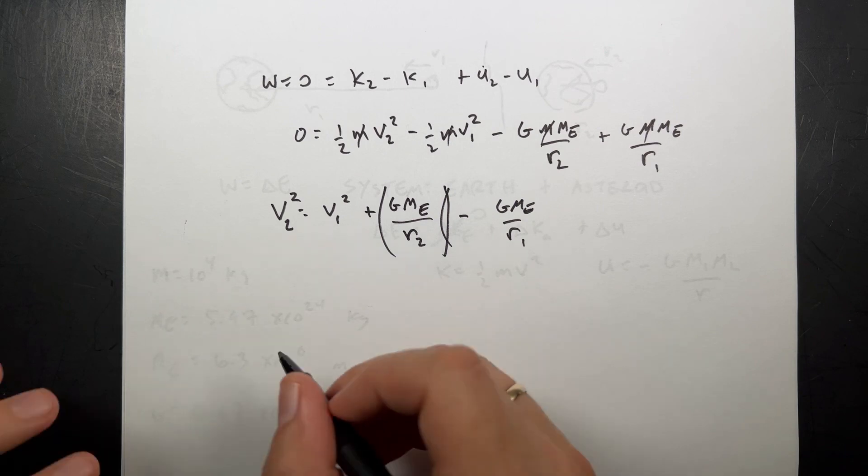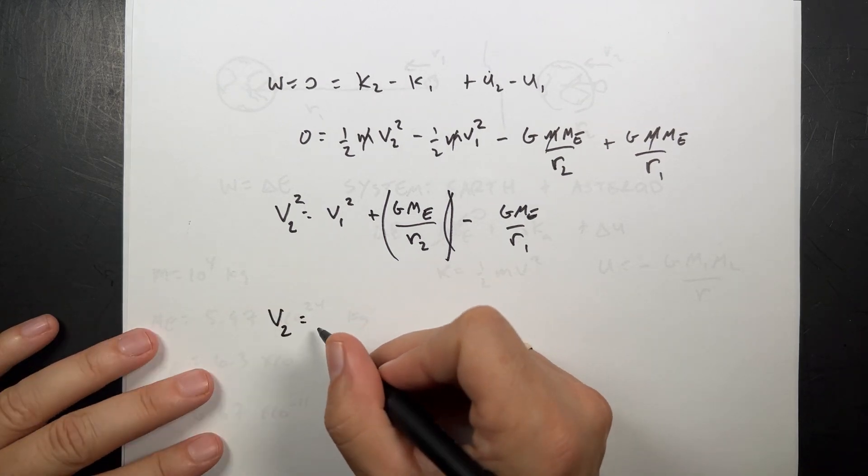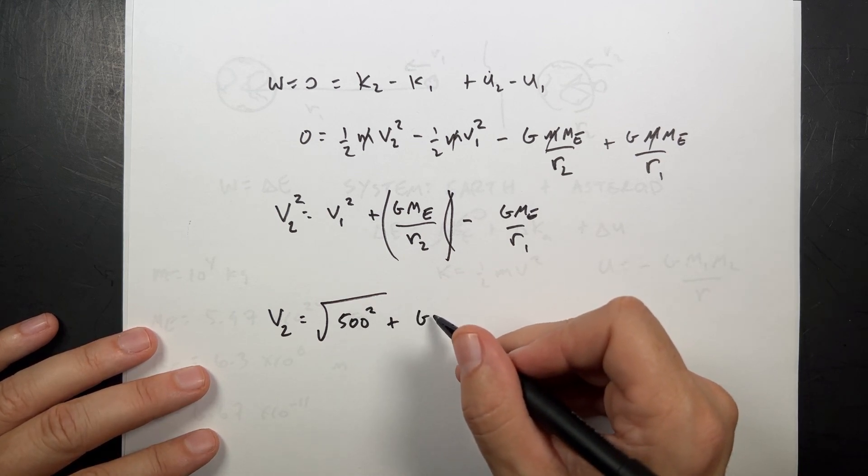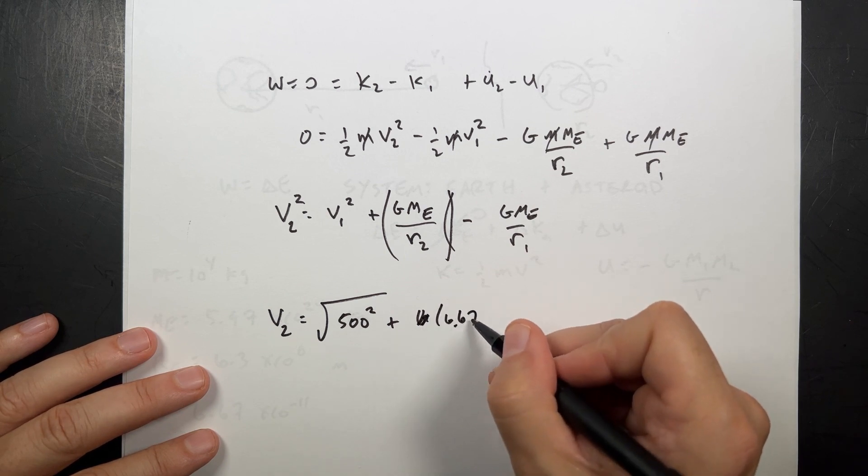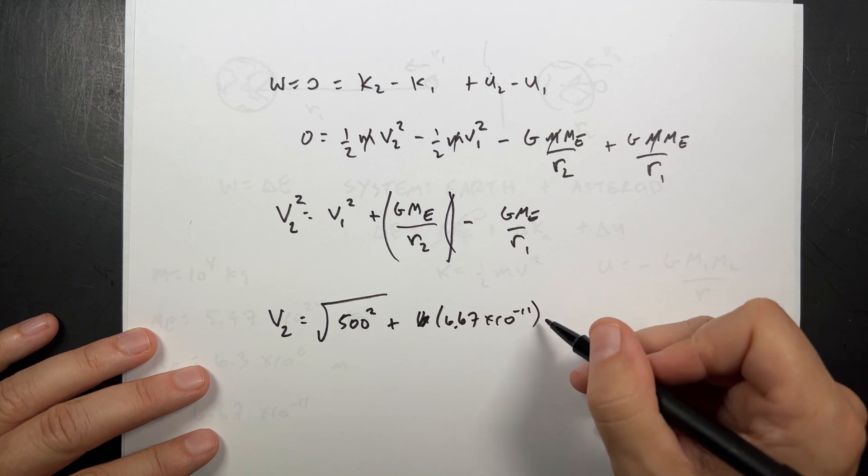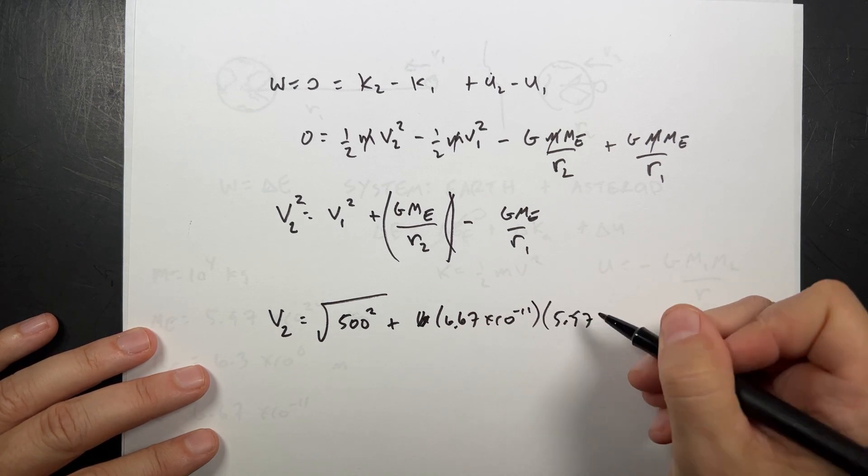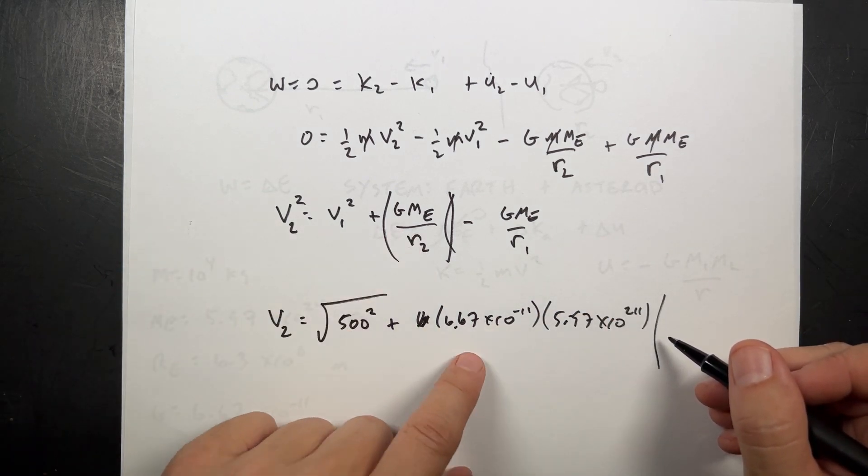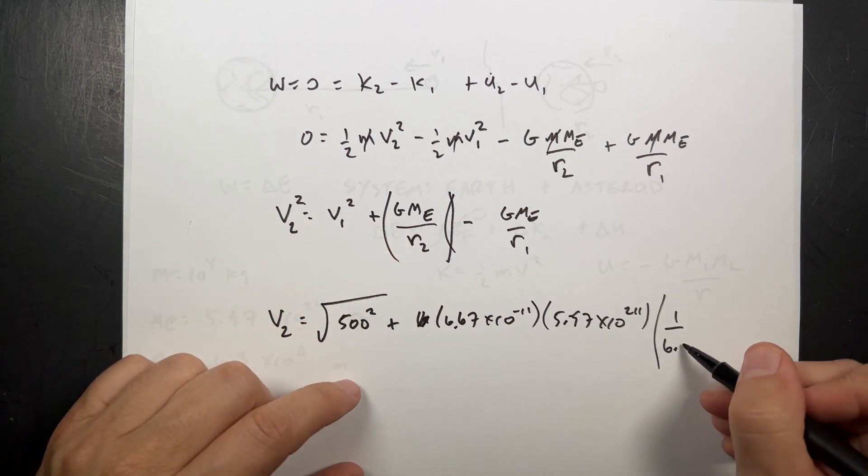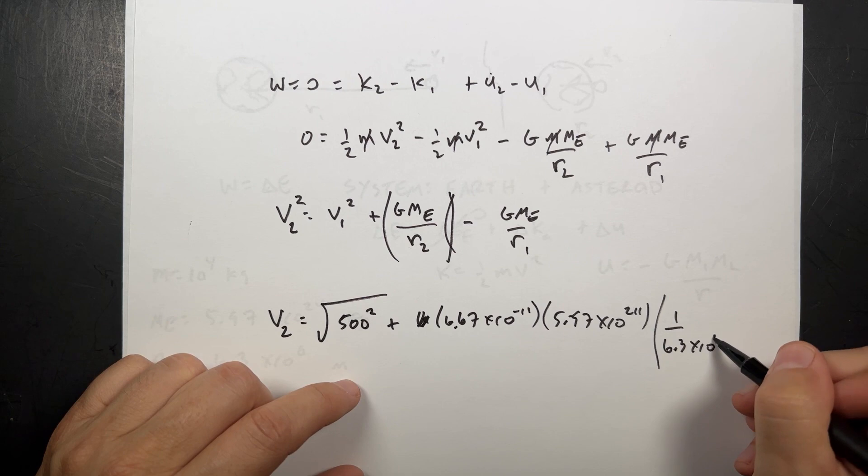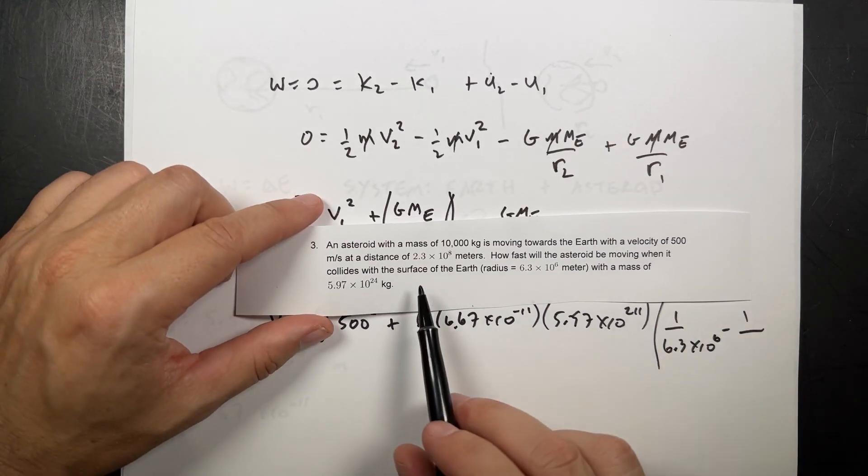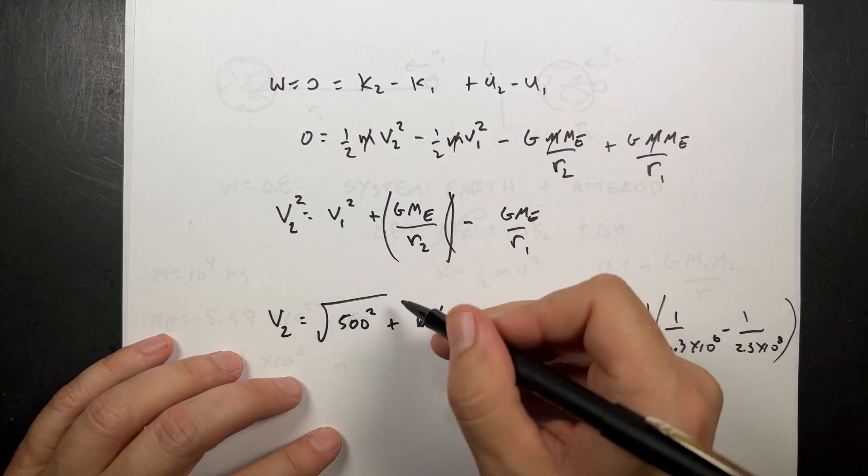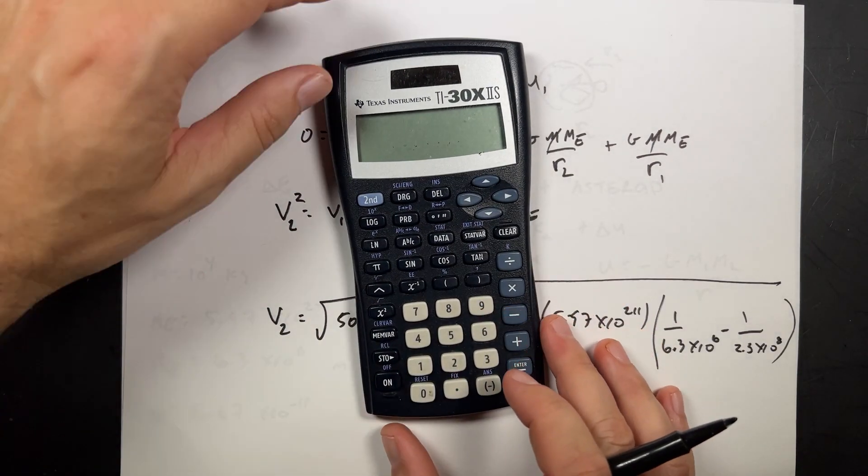And then I'd need to take the square root. So let's find, let's put in our values. v2 is going to be equal to the square root of v1 squared, 500 squared, plus g 6.67 times 10 to the negative 11th times the mass of the Earth, 5.97 times 10 to the 24th. And then I'm going to make this more complicated because I don't want to write that out twice. So I have 1 over r2, 6.3 times 10 to the 6th, minus 1 over r1 was 2.3 times 10 to the 8th. And that's all square rooted. So that's a challenge to put in our calculator. So I'd like a challenge. Let's do it.